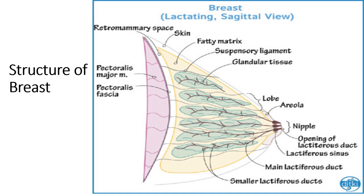In this image, you can see the structure of breast. It consists of pectoralis major muscle, pectoralis fascia, retromammary space, and the skin covering the breast tissue. The internal structure of breast consists of a fatty matrix, suspensory ligaments attaching the breast tissue to the pectoralis fascia, and glandular tissue. You can see different mammary glands and the lobe situated between the suspensory ligaments. There is areola and nipple. Smaller lactiferous ducts are seen in each lobule, and ducts from different lobules join to form the main lactiferous duct.